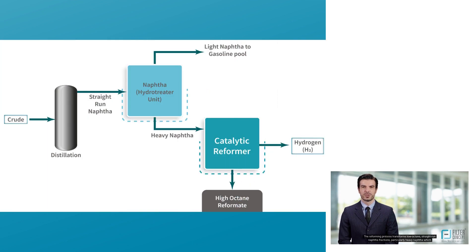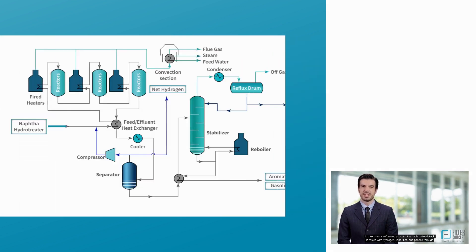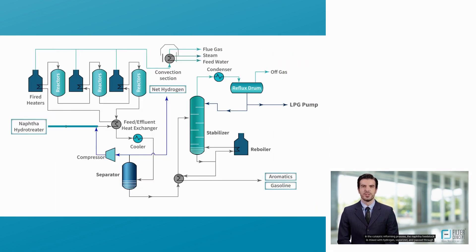The reforming process transforms low-octane, straight-run naphtha fractions — particularly heavy naphtha which is rich in naphthenes — into high-octane, low-sulfur reformate, which is a major blending product for gasoline. In the catalytic reforming process, the naphtha feedstock is mixed with hydrogen.